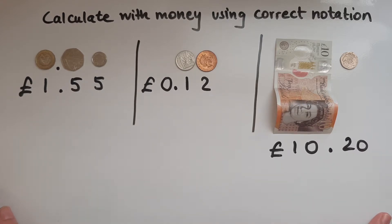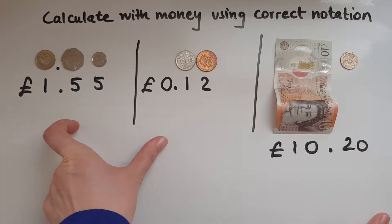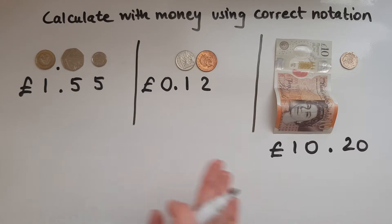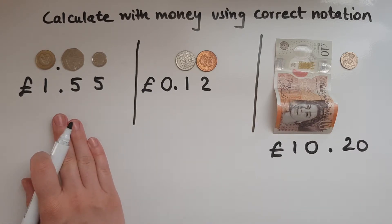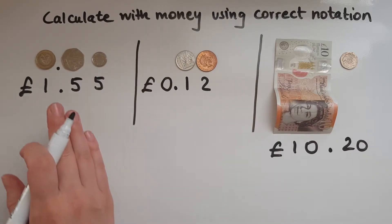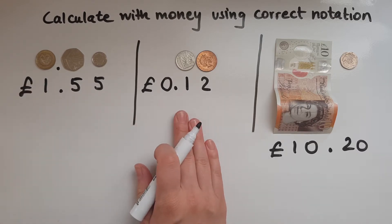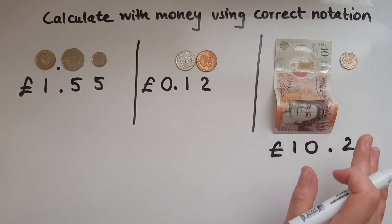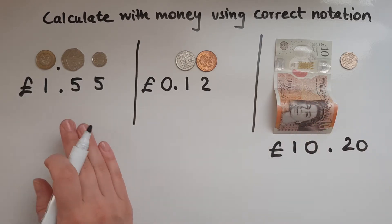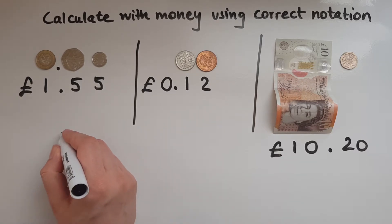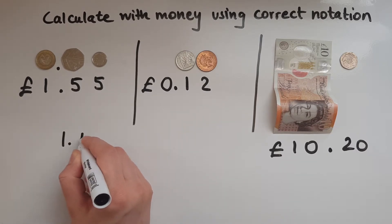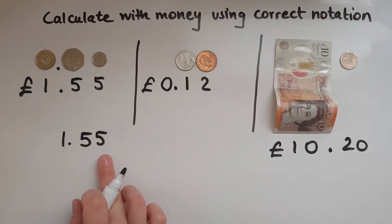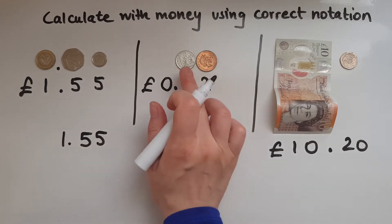So what I'm going to do with these amounts: first I'll add these two together, then I'll subtract from this one. Here is the cost of, let's say, a can of beans, here is the cost of a carrier bag, and this is the money I've got in my pocket. Let's add the first two together. Notice how I line them up: I've got one pound and 55 pence.